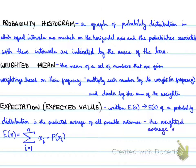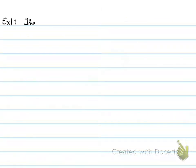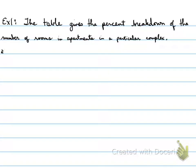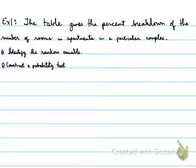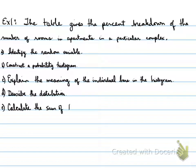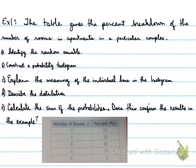The weighted average value of the random variable is the expected value. Example 1: the table gives the percent breakdown of the number of rooms in apartments in a particular complex. We are to identify the random variable, construct a probability histogram, explain the meaning of the individual bars in the histogram, describe the distribution, and calculate the sum of the probabilities.